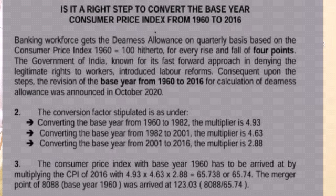The banking workforce gets the dearness allowance on a quarterly basis based on the CPI. Consumer Price Index 1960 equals 100, with a rise or fall calculated for every four points.